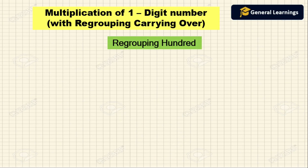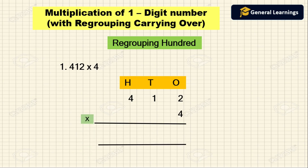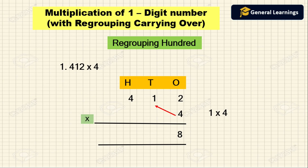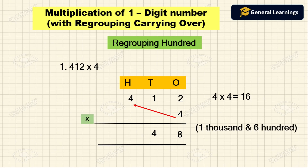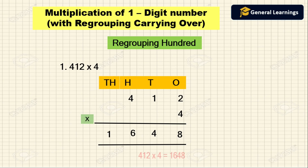Next we see regrouping hundreds — example: 412 into 4. We arrange the number by place value and multiply. Ones column: 2 into 4 is 8. Tens column: 1 into 4 is 4. Hundreds column: 4 into 4 is 16. This 16 can be written as 1,600 — write 6 in the hundreds place and 1 in the thousands place. So 412 into 4 is 1,648.